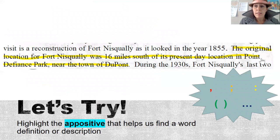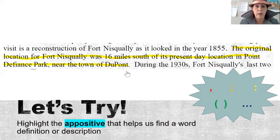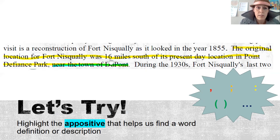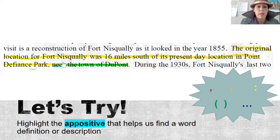Let's try this sentence: 'The original location for Fort Nusqually was 16 miles south of its present day location in Point Defiance Park, near the town of DuPont.' Where do you think the appositive is? If you guessed right — ding ding ding — you are a word detective! It's talking about where Fort Nusqually was, near Point Defiance Park. If you don't know where that is, the comma tells you a little bit more: Point Defiance Park is near the town of DuPont. This appositive gives us more information about the location to help us understand the text better.